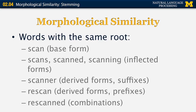Words with the same root usually have similar meanings. For example, the word 'scan' in its base form can also be converted into 'scans', 'scanned', or 'scanning', which are different forms of inflection. The first could be a plural or third-person singular verb, the second is a past tense, and the third is a gerund.